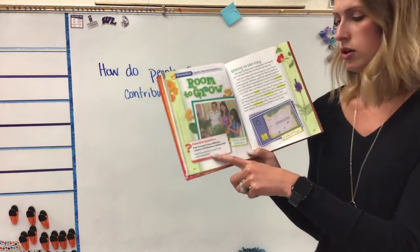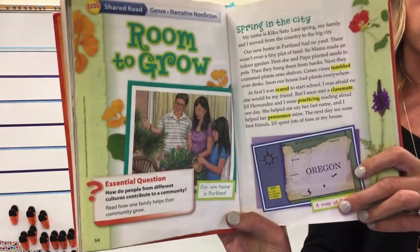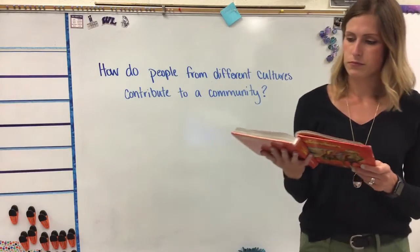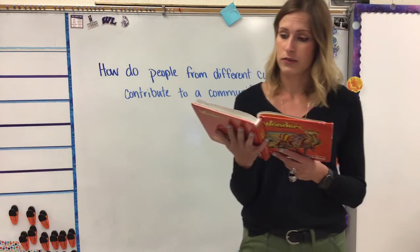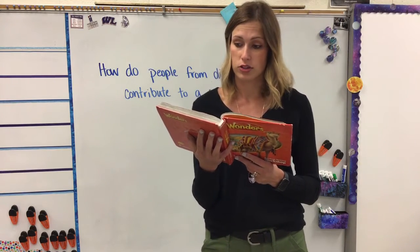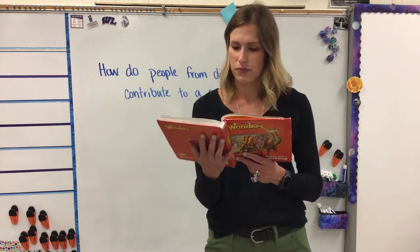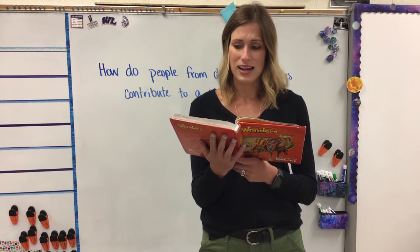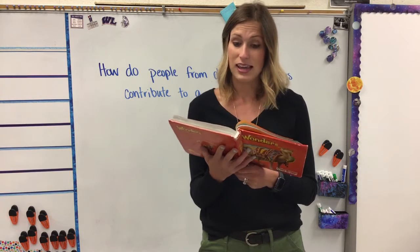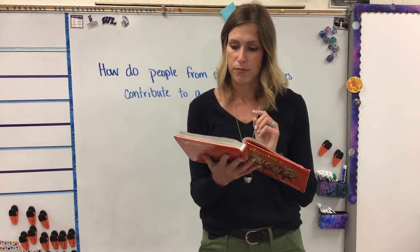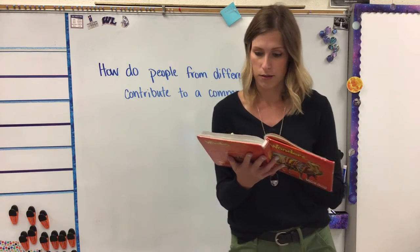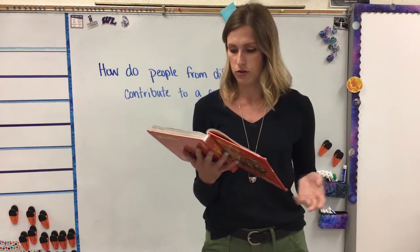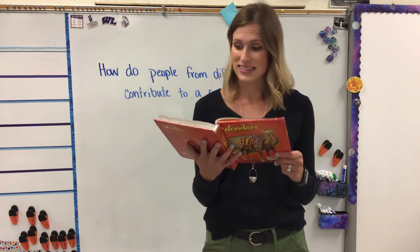Room to Grow. Essential question: how do people from different cultures contribute to a community? Make sure that as I'm reading you're following along with me. I'm on page 54. 'Spring in the City. My name is Kiku Sedo. Last spring my family and I moved from the country to the big city. Our new home in Portland had no yard — there wasn't even a tiny plot of land. So Mama made an indoor garden. First she and Papa planted seeds in pots, then they hung them from hooks. Next they crammed plants on shelves. Green vines tumbled over desks. Soon our house had plants everywhere.'